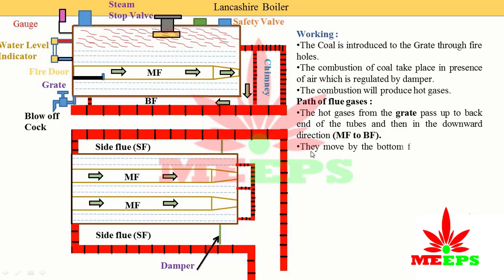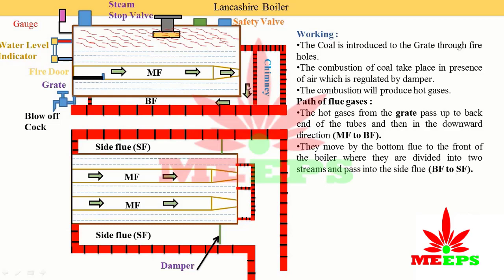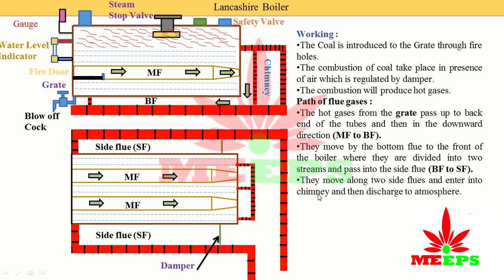From the back end of the tubes, the gases move in a downward direction — main flow to bottom flow. The bottom flue then carries gases to the front of the boiler. At the front of the boiler, the gases divide into two streams, one on each side, and pass into the side flues — this is the transition from bottom flow to side flow.